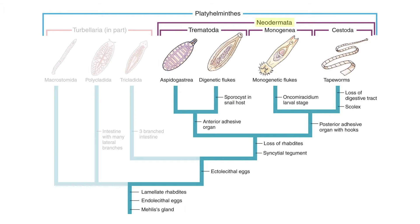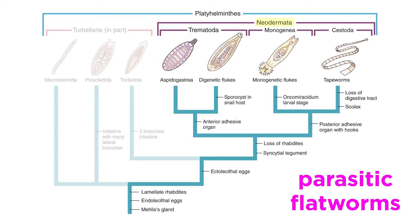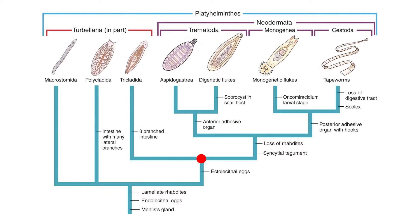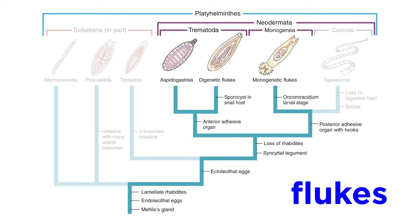Earlier in the series we learned about the clade Neodermata, and within this clade we can find the parasitic flatworms of Trematoda, Monogenea, and Cestoda. These are highly specialized parasites that descended from a lineage of free-living flatworms within Rhabditophora, though they have secondarily lost their rhabdites. All members of Trematoda and Monogenea are ectoparasites, collectively known as flukes.